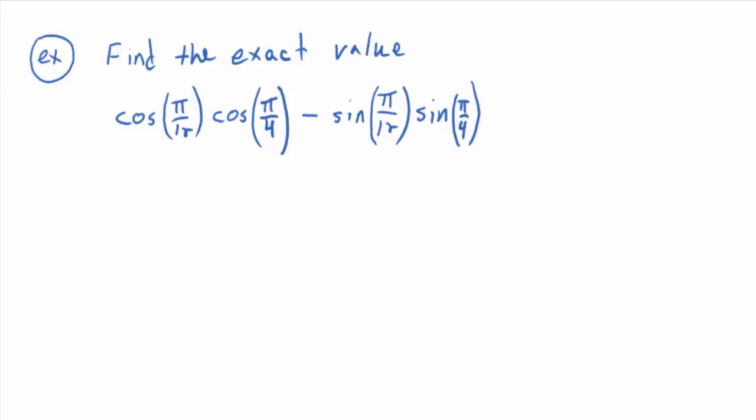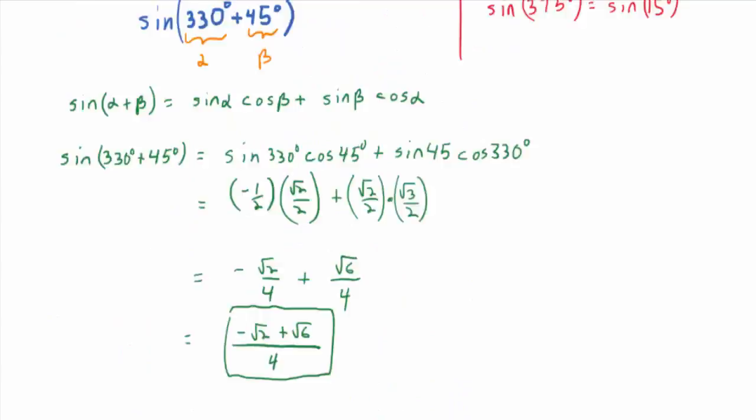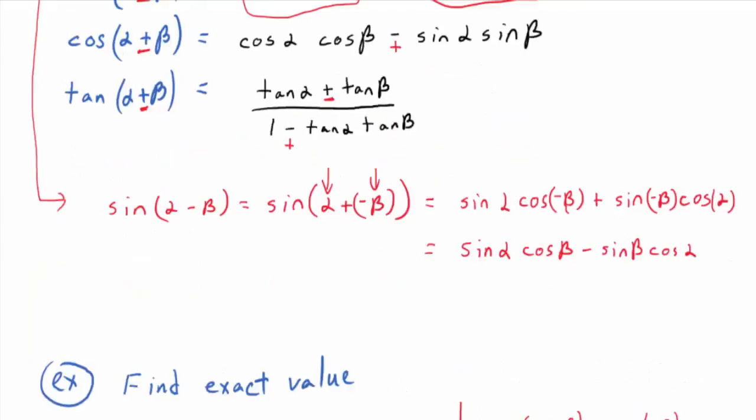Find the exact value of cosine of pi/12 times cosine of pi/4 minus sine of pi/12 times sine of pi/4. You have to recognize when an identity is staring you in the face. This looks like the right-hand side of the cosine sum identity: cosine alpha plus beta equals cosine alpha cosine beta minus sine alpha sine beta. Write it down every time you use it — cosine, cosine, sine, sine with a minus, angles in order.